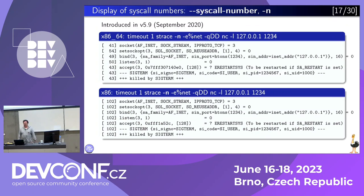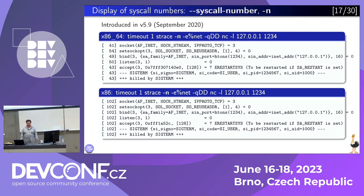You can also show syscall numbers. Which is kind of strange — why would you need syscall numbers? But here's an example. There is one dying architecture called x86 which used to have, and still has, a few multiplexing system calls like socketcall. There are still glibc libraries that use this system call for backwards compatibility. So if for some reason you want to know exactly which way this socket call was made — via a direct system call or via socketcall — you can use this.